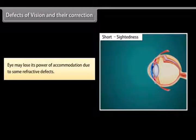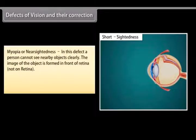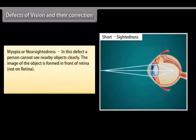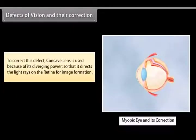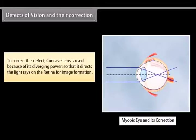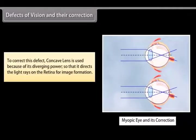Defects of vision and their correction: The eye may lose its power of accommodation due to some refractive defects. There are three such defects. Myopia, or nearsightedness: in this defect a person cannot see distant objects clearly. The image of the object is formed in front of the retina, caused either due to elongation of the eyeball or excessive curvature of the eye lens. To correct this defect, a concave lens is used because of its diverging power, which directs the light rays onto the retina for image formation.